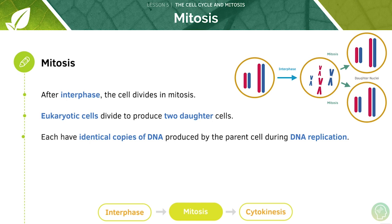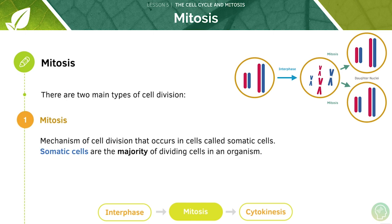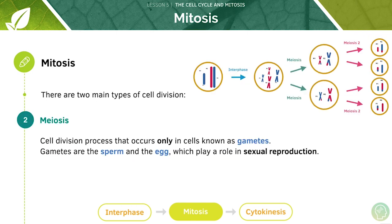After interphase the cell divides in mitosis. The eukaryotic cell divides to produce two daughter cells each with identical copies of DNA produced by the parent cell during DNA replication. Mitosis is the mechanism of cell division that occurs in somatic cells, which are the majority of dividing cells in an organism. Meiosis is a cell division process that occurs in gametes — the sperm and the egg — which play a role in sexual reproduction. In this section we'll only be focusing on mitosis, but note that much of the process of mitosis shows up in meiosis as well.